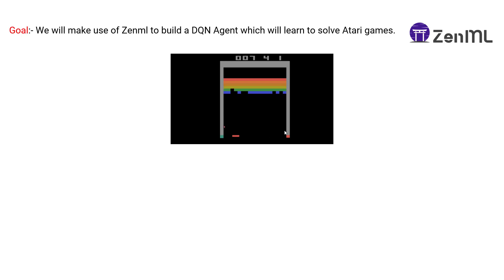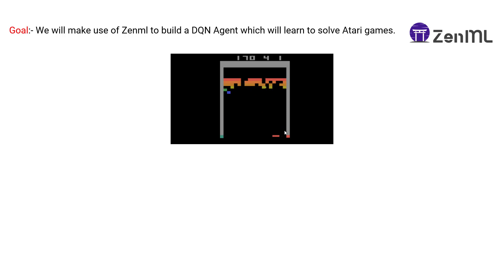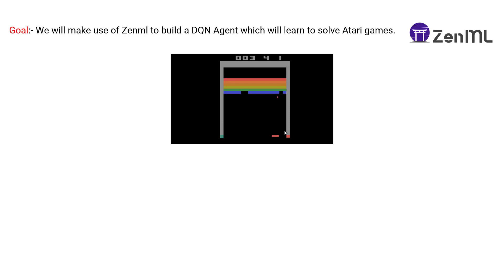In this video, we will make use of ZenML to build a DQN agent that will learn to solve Atari games. DQN — Deep Q-Network — is one of the fundamental and very powerful reinforcement learning algorithms. This video will not teach you what exactly DQN is in detail; there is a blog with a detailed understanding of DQN. You can comment below or check other resources online.